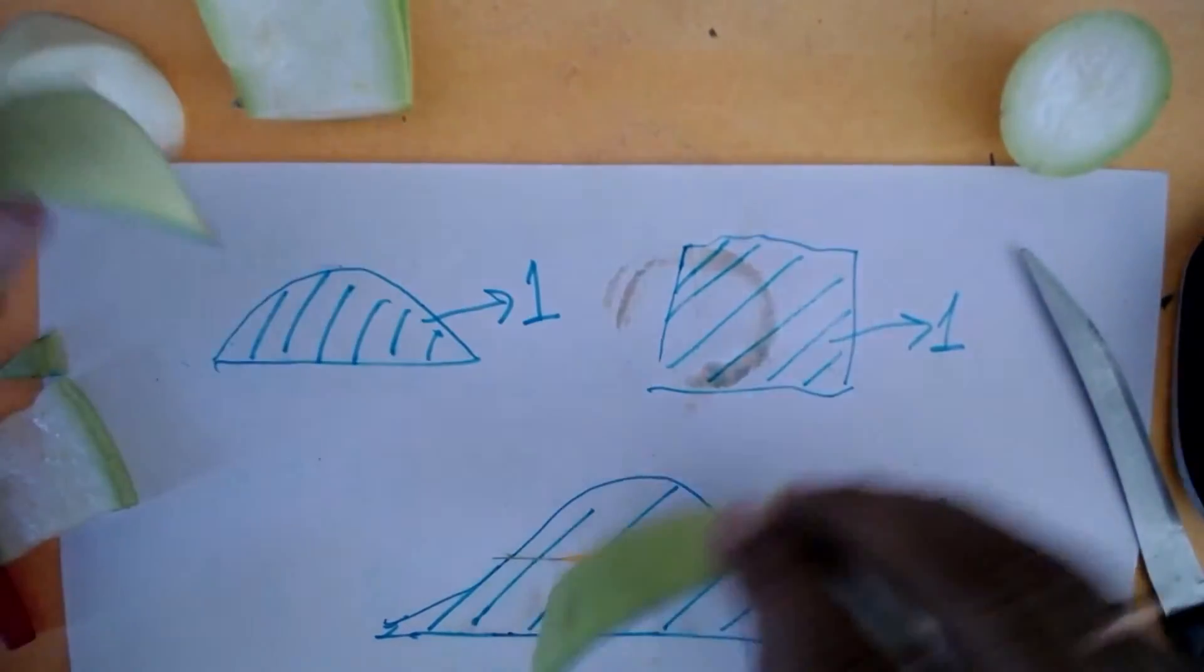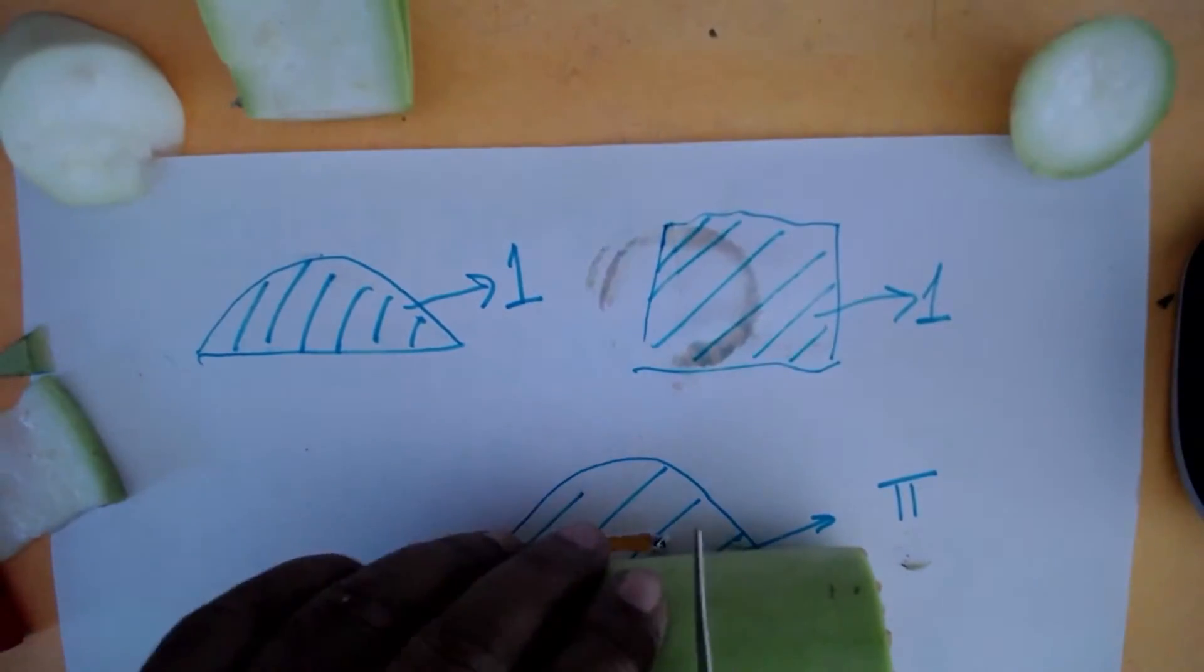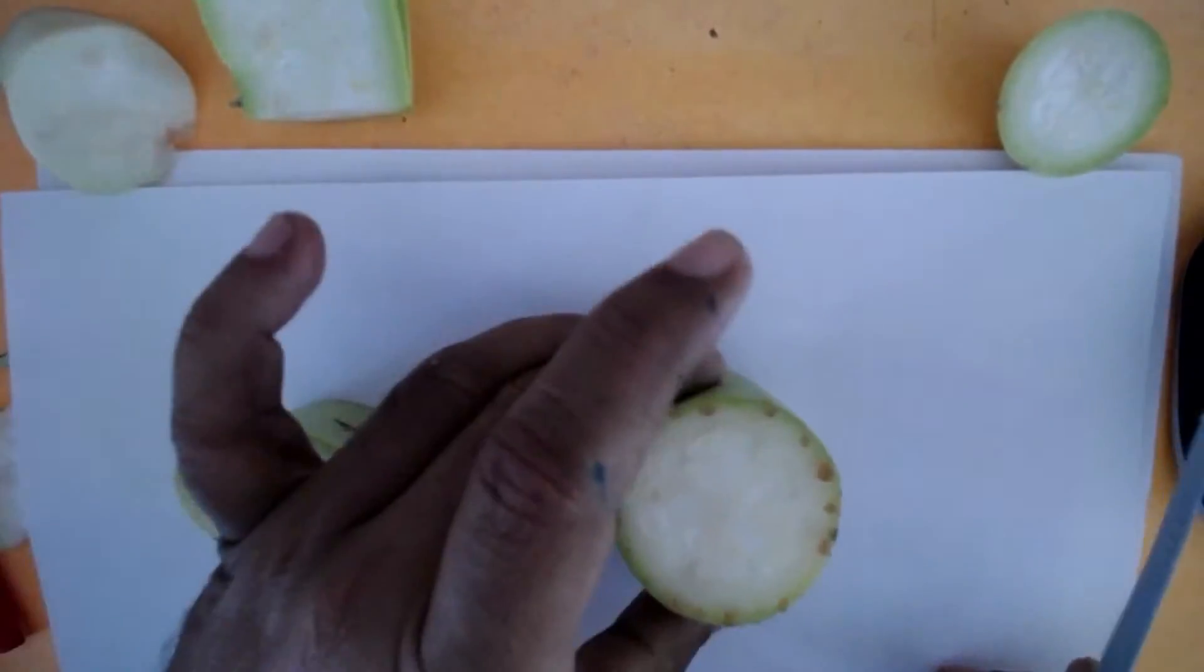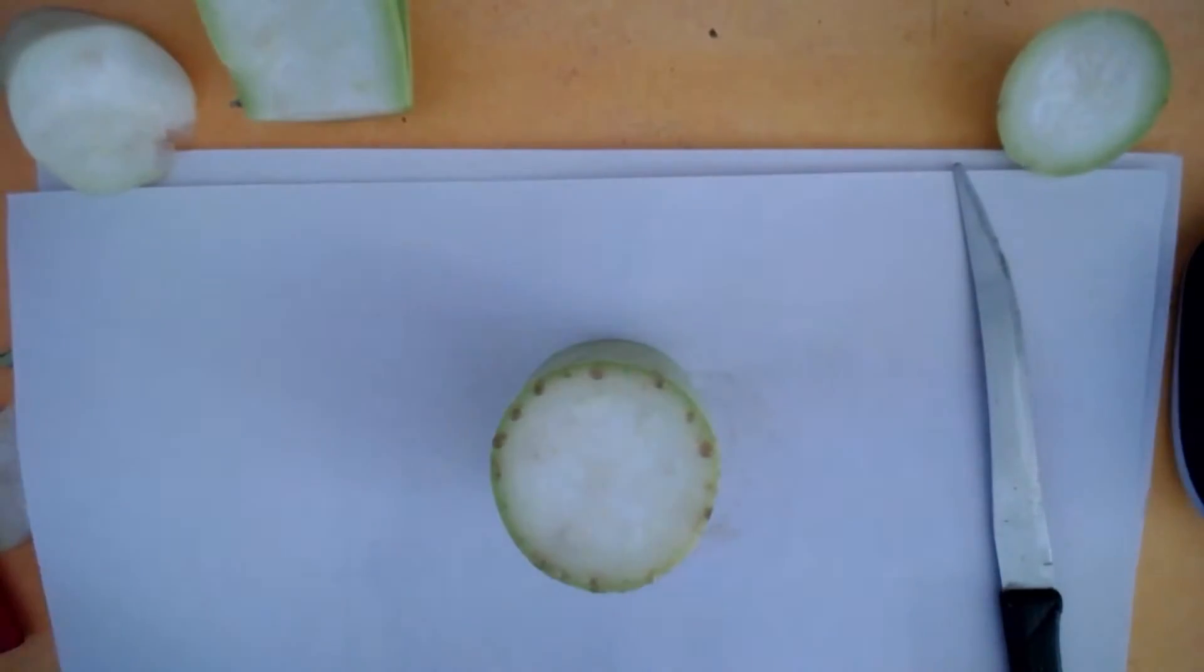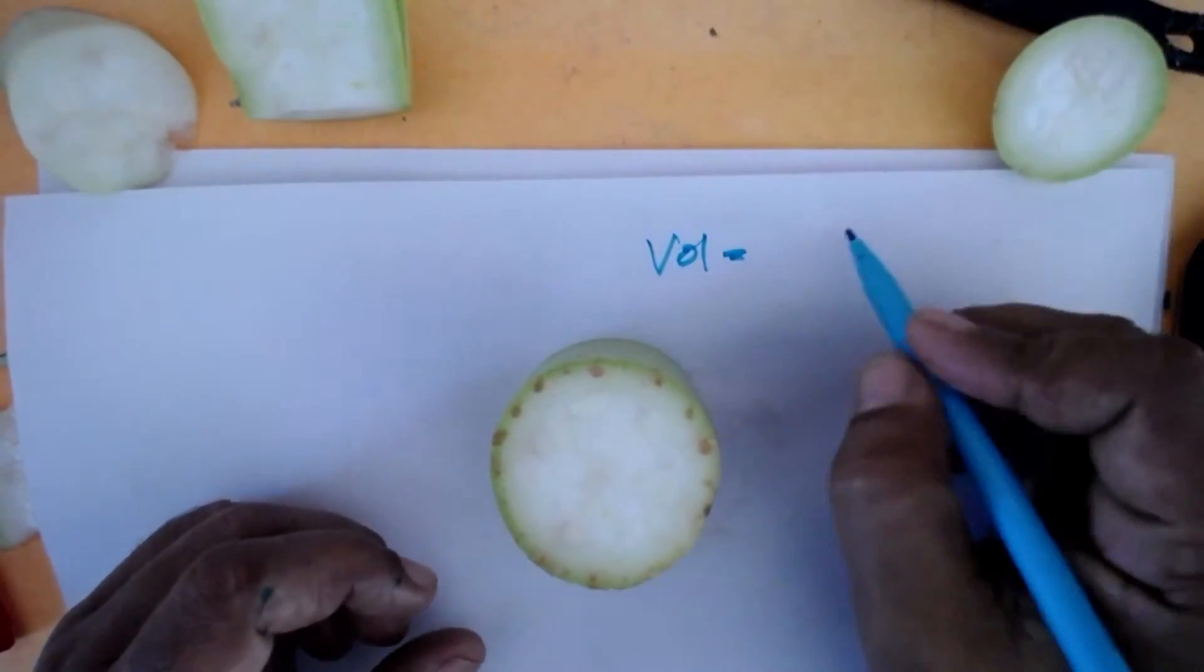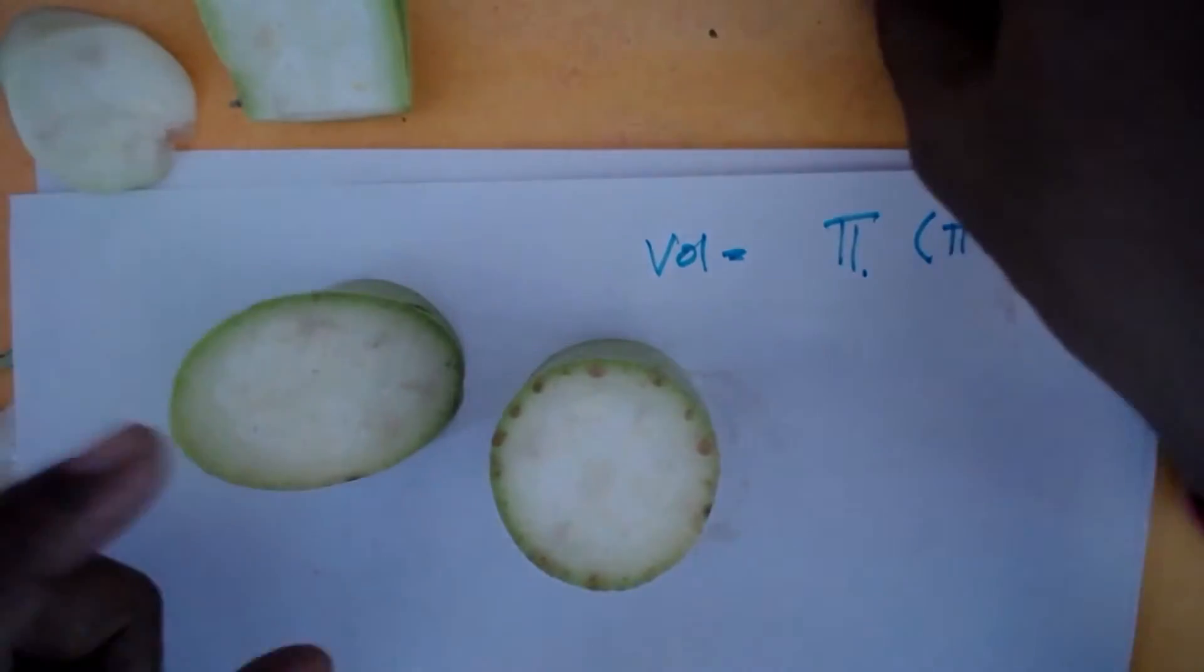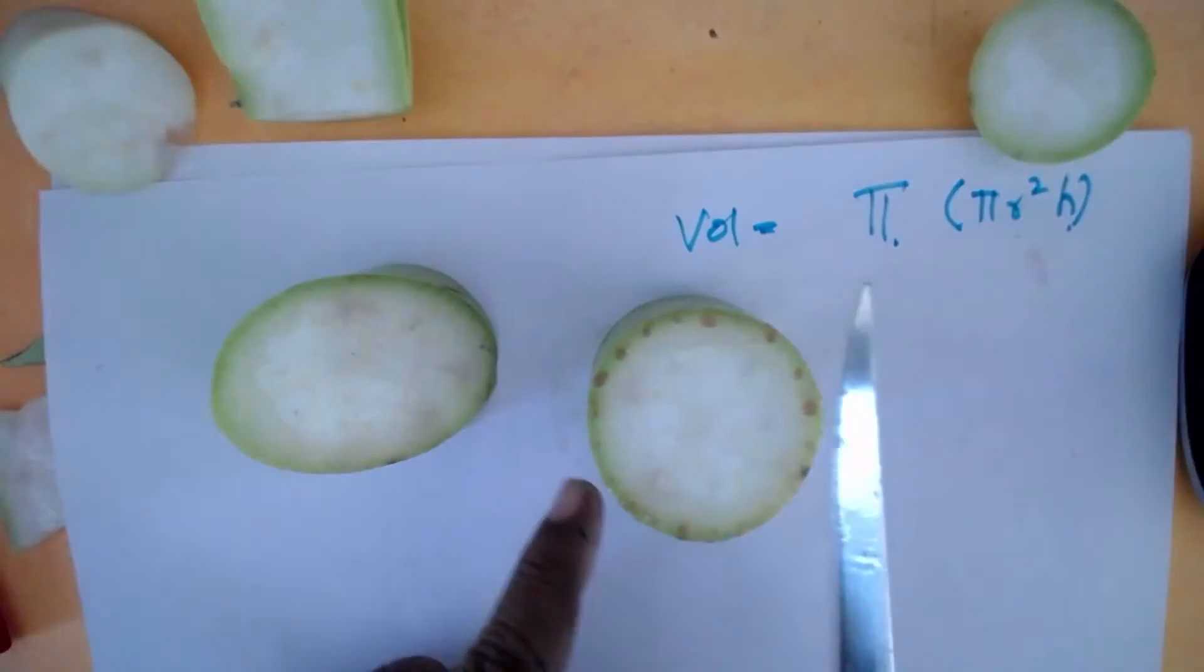Something even more interesting happens when we consider the volumes. Let me take another piece. I made the same cut. When we took this piece, the volume was π. The volume was π because it's πr²h, and if everything is unit, this is π. When I cut it in half, the volume must be π/2. This is when I'm cutting from this end all the way to this end.